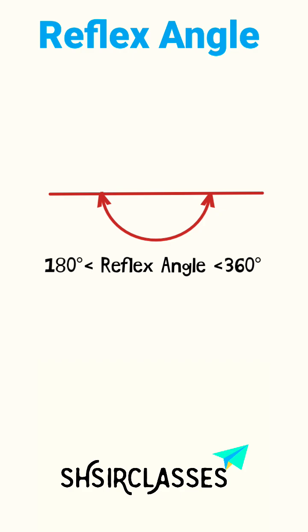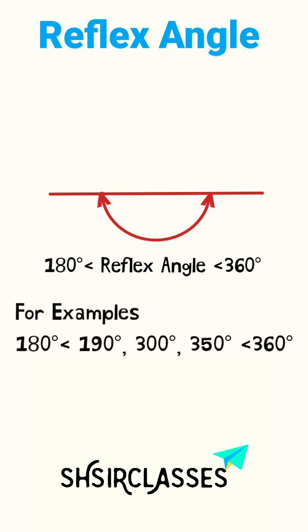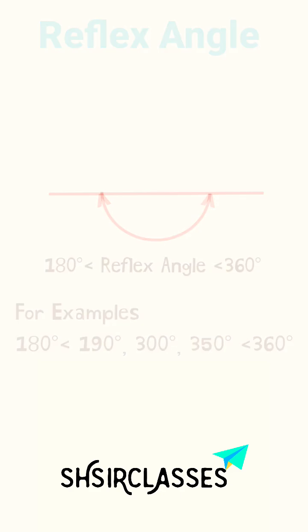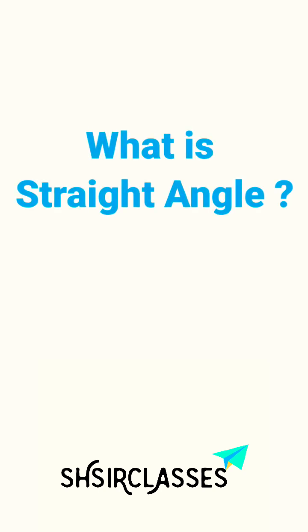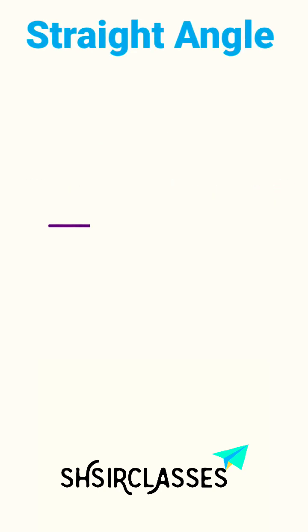360 degrees. For examples: 190 degrees, 300 degrees, and 350 degrees — all these angles are greater than 180 degrees and less than 360 degrees.